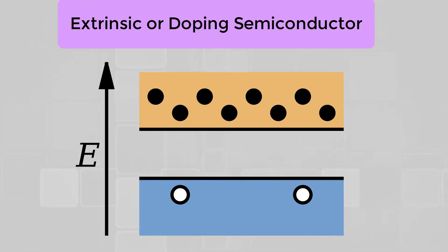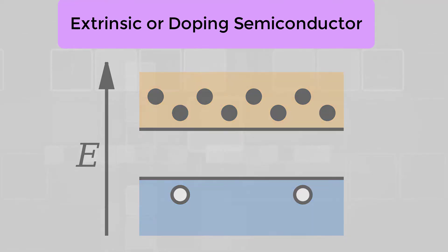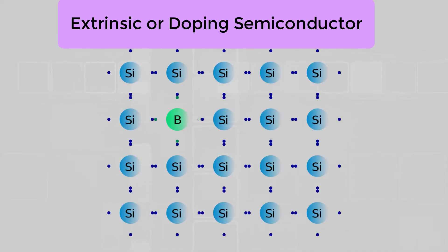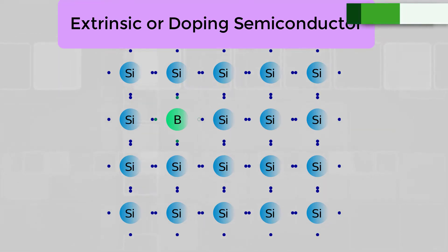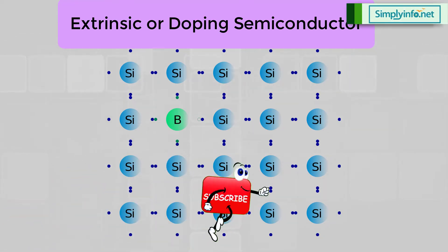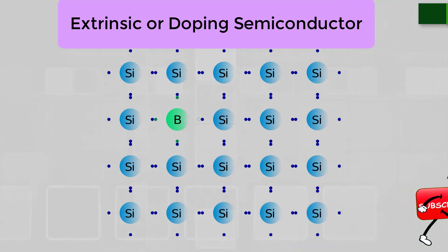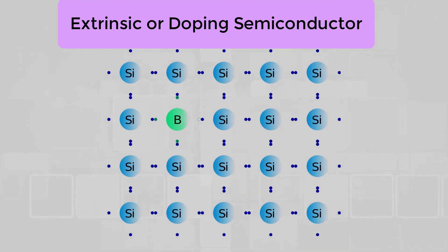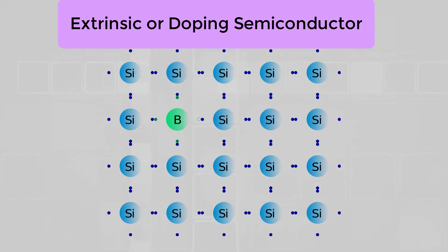Generally, one impurity atom is added to 10^8 atoms of a semiconductor. The purpose of adding impurity in the semiconductor crystal is to increase the number of free electrons or holes to make it conductive. If a pentavalent impurity having 5 valence electrons is added to a pure semiconductor, a large number of free electrons can exist. If a trivalent impurity having 3 valence electrons is added, a large number of holes will exist in the semiconductor.